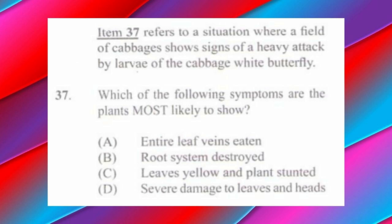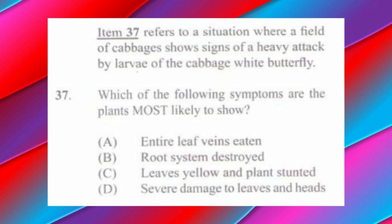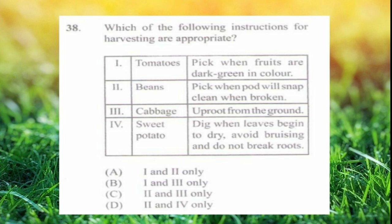Question number thirty-seven refers to a field of cabbage showing signs of heavy attack by larvae of the cabbage white butterfly. Which symptoms are the plants most likely to show? The answer is d) severe damage to leaves and heads. The larvae eat the leaves but will not be able to eat all the veins of the leaves.